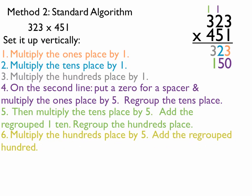And finally, multiply the hundreds place by 5 and add the regrouped 100. So, 5 times 3 is 15. Plus that 1 makes 16.